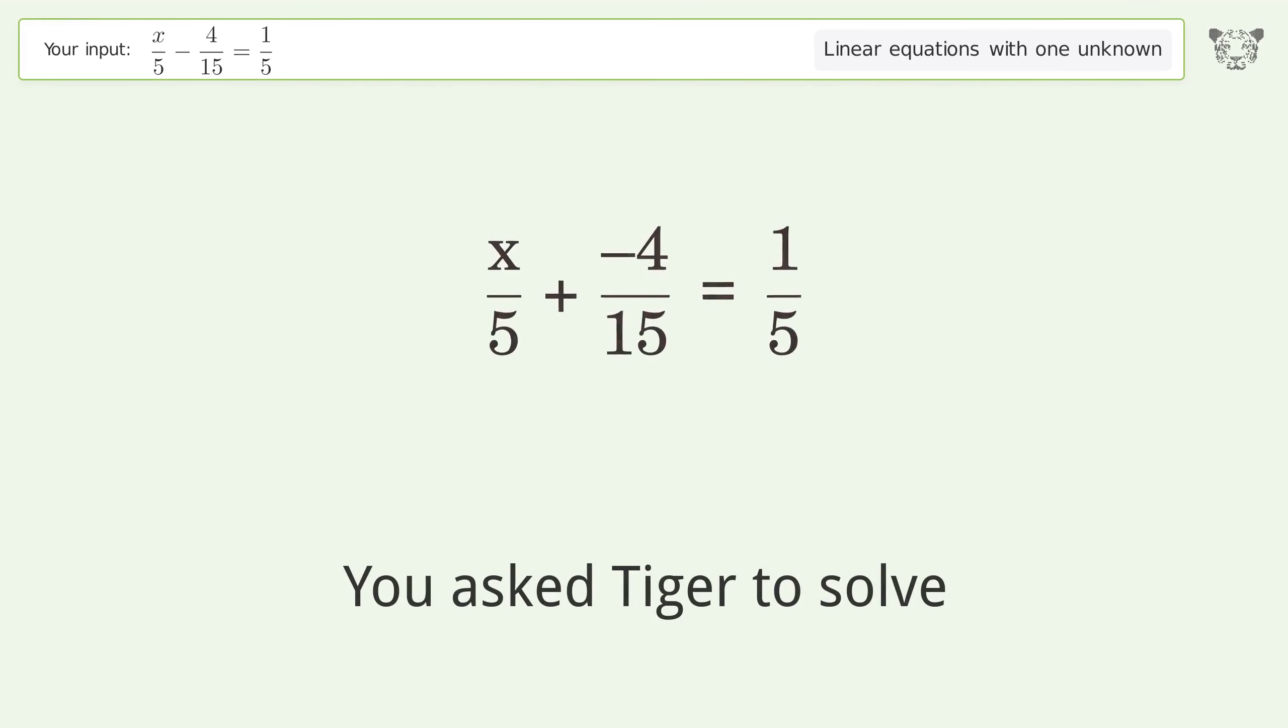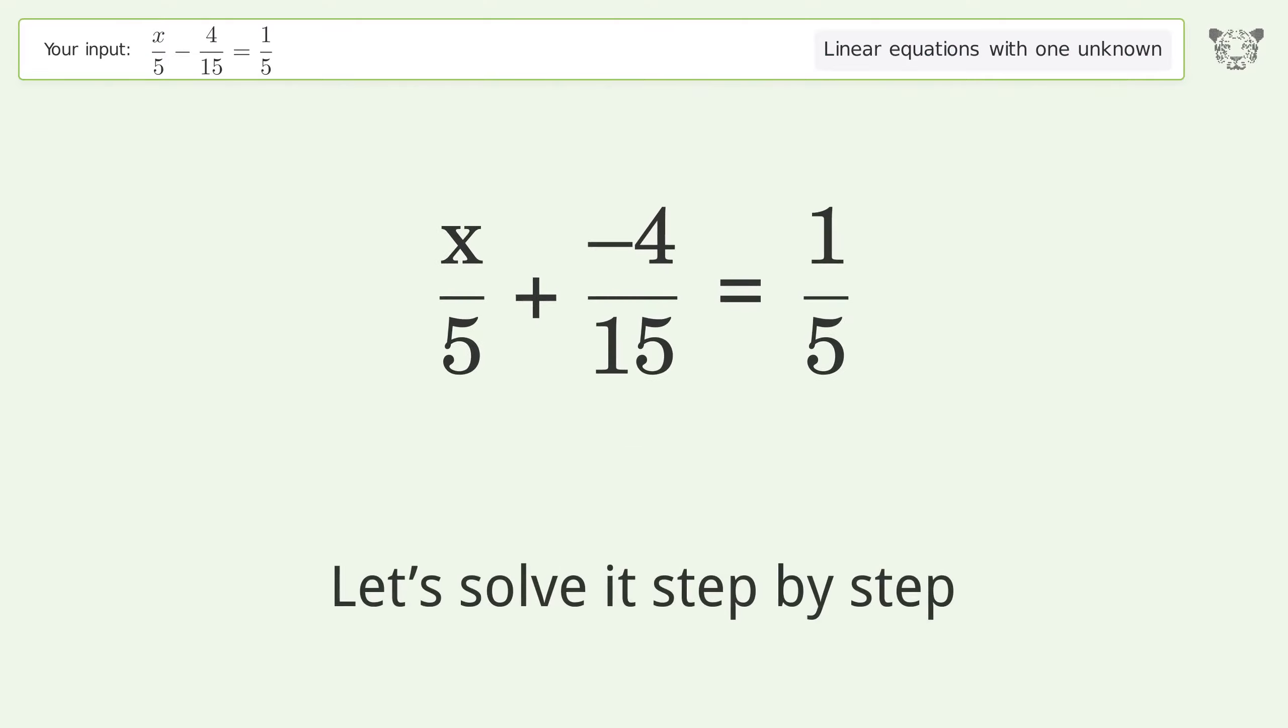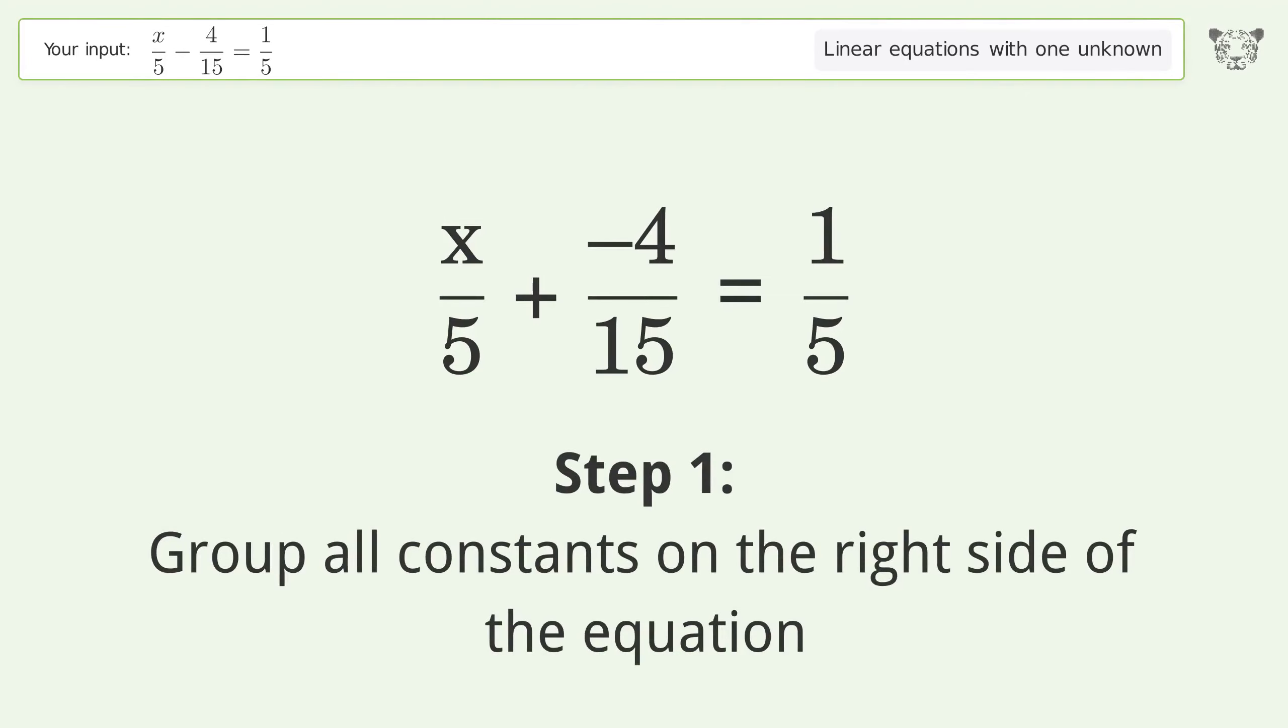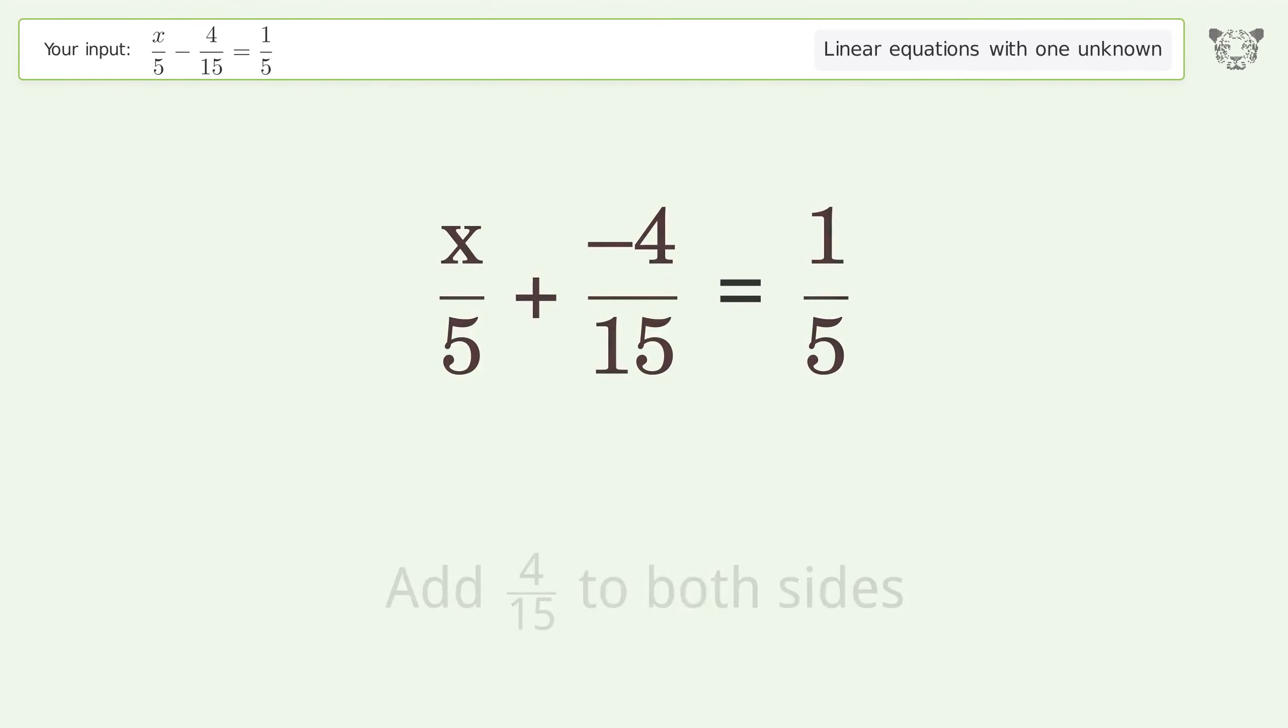You ask Tiger to solve this. This deals with linear equations with one unknown. The final result is x equals 7 over 3. Let's solve it step by step. Group all constants on the right side of the equation. Add 4 over 15 to both sides.